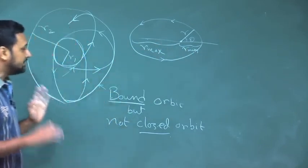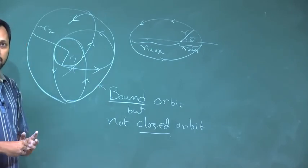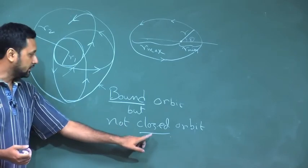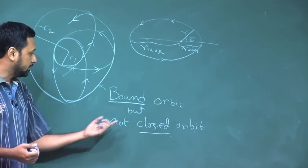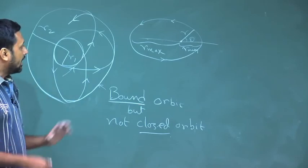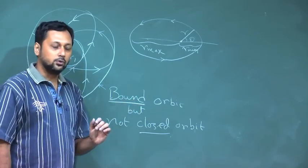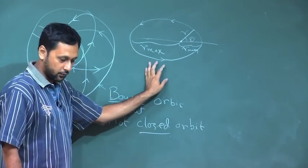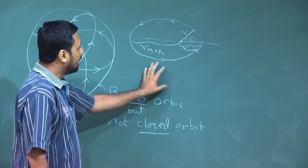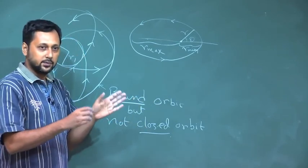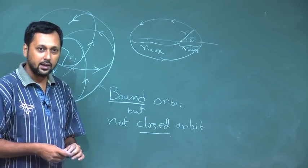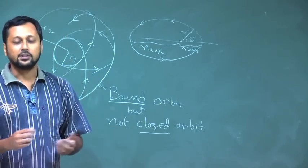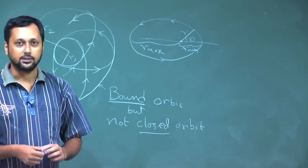In general, in a central force field we can have a scattering motion or a bound motion providing a bound orbit but not necessarily a closed orbit. In the next class, we are going to focus on the inverse-square law of force, see how the equivalent potential picture looks, and describe the motion in a central force field using the equivalent one-dimensional motion picture. Thank you.